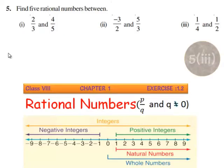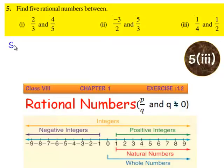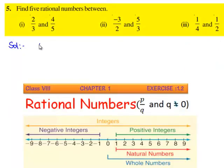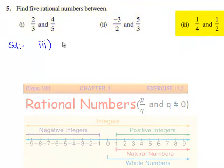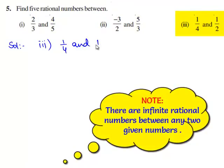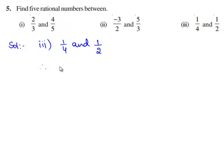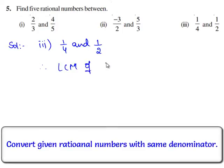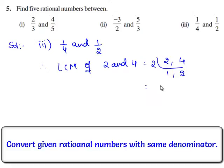Now, let us move on to the third bit of the question. The given two rational numbers are 1 by 4 and 1 by 2. Let us express the rational numbers with a common denominator. Therefore, we need to find the LCM of 2 and 4. The LCM of 2 and 4 is found by taking 2 times 2, which equals 4. Therefore, the LCM is 4.